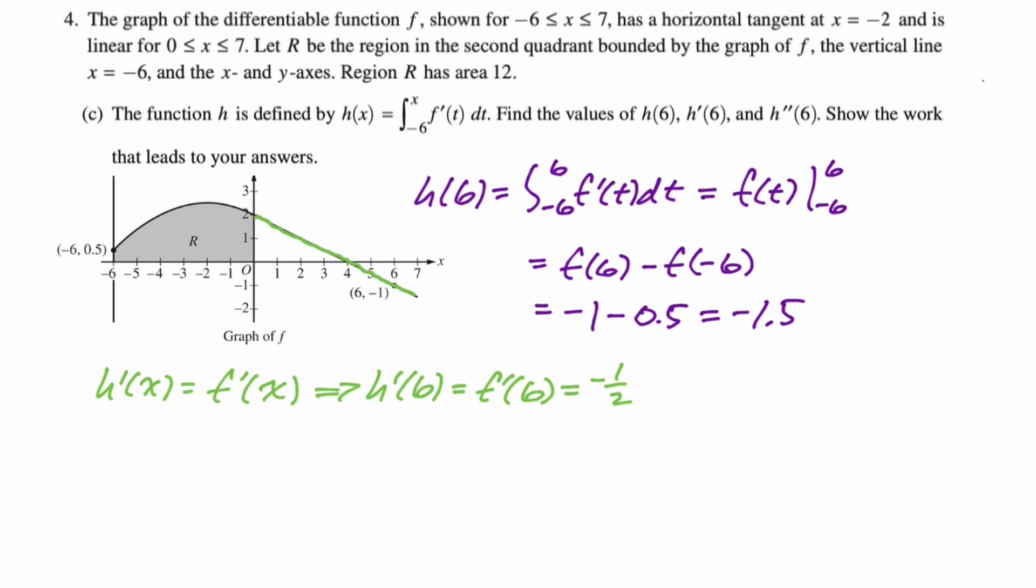And then finally, we need to find h double prime of six. So h double prime of x is f double prime of x. If f of x is linear, then f prime is constant and f double prime is zero. So h double prime of six is going to be f double prime of six, and is just going to equal zero, because of the fact that it's linear.